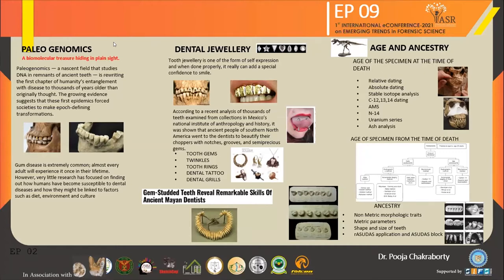For the age since death, various dating methods like stable isotope analysis, carbon dating, N14, uranium series, and ash analysis in the case of incinerated remains can be done.